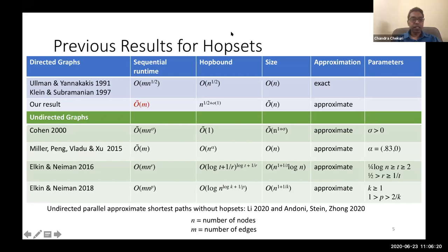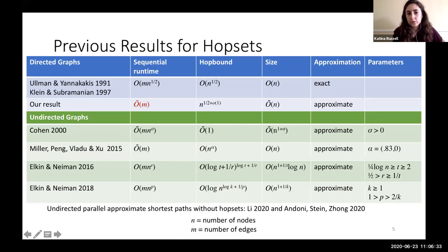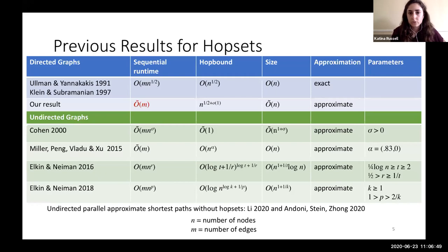There's a question from Hung Lee: is there any lower bound for directed hopsets? There is a lower bound for shortcutting which can be applied to directed hopsets, and the lower bound is n^(1/6). So there's a bit of a gap between our result, which is n^(1/2 + o(1)), and n^(1/6) when there's a linear number of shortcuts added.